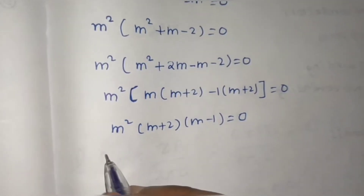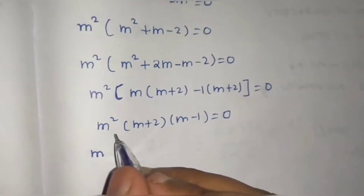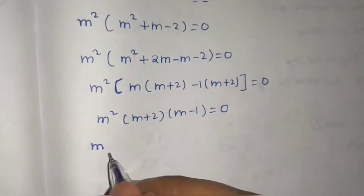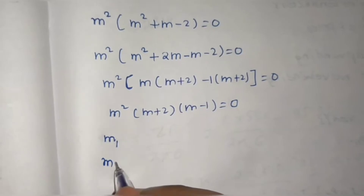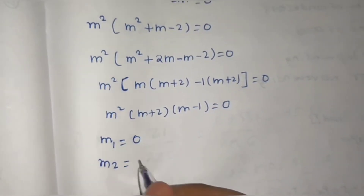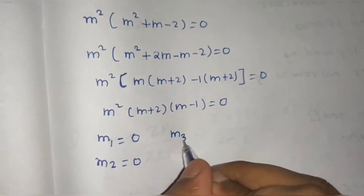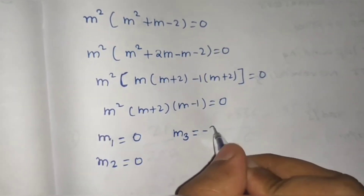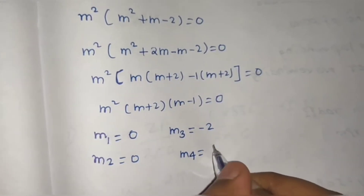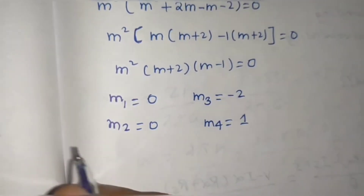From this we get our roots. From m² = 0 we get a repeated root: m₁ = m₂ = 0. From (m + 2) = 0 we get m₃ = -2, and from (m - 1) = 0 we get m₄ = 1.